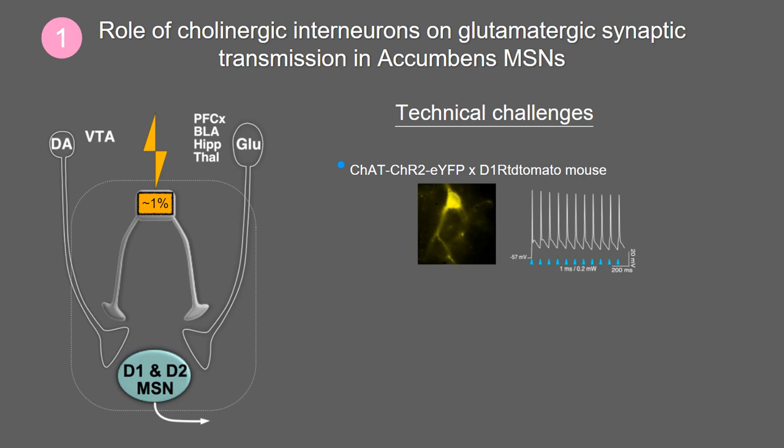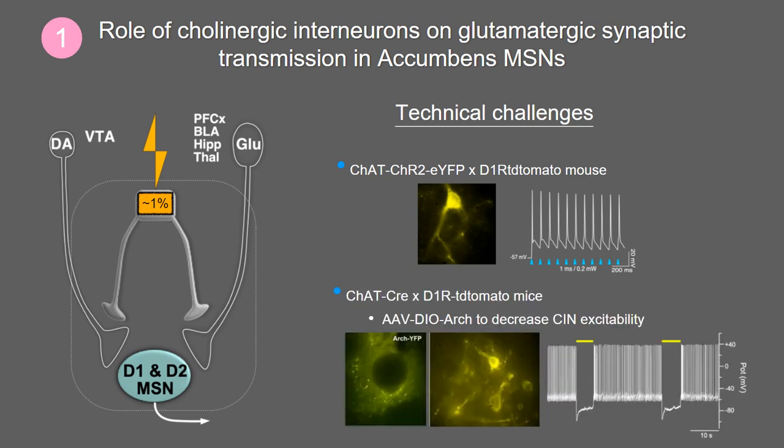To inhibit these neurons, we use a ChAT-Cre mouse, into which we inject a viral vector — an AAV double-flox — containing archaerhodopsin. Archaerhodopsin is also a light-sensitive protein, but when activated by light it inhibits the cell rather than exciting it. As shown on the graph, when the light is turned on, the spontaneous activity of the cholinergic interneurons is totally interrupted.